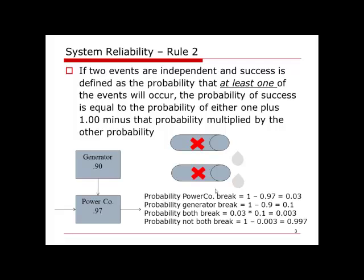We calculate the probability that the power company fails and the probability that the generator fails, then multiply these two numbers together, giving us 0.003 — the probability that both the generator and the power company shut down. Now I use one minus this number, which gives the probability that not both components break, yielding a system reliability of 0.997. For a parallel structure, the system reliability is always higher than any single component's reliability.